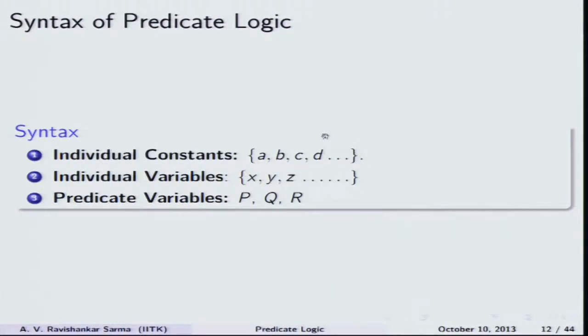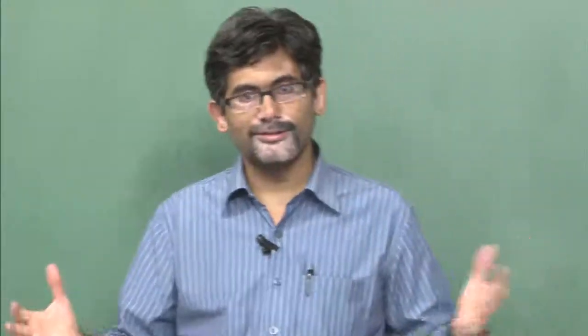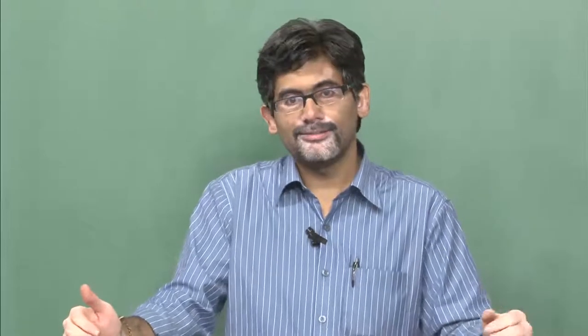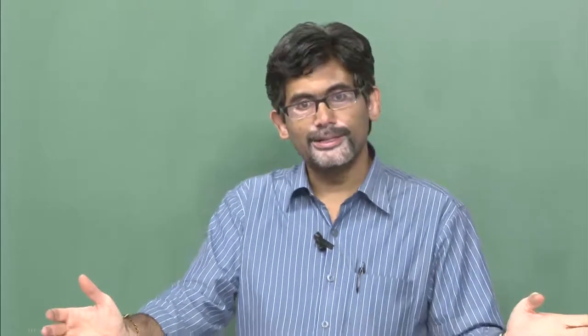Now let us discuss the syntax of predicate logic. It tells us what kinds of things we use in our language of predicate logic. Then we move to semantics of predicate logic — what do we mean by saying a particular sentence is true or false. Then we will talk about important decision procedure methods for checking the validity of a given formula in predicate logic. We will discuss at least two or three important methods — semantic tableaux, resolution, and natural deduction in the context of predicate logic.